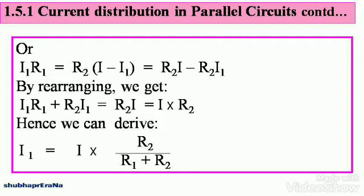By rearranging, we get I1 R1 plus R2 I1 sent to the left hand side is equal to R2 into I. R2 into I can be written as I into R2.